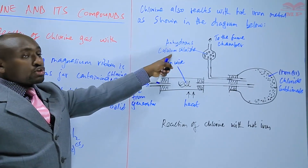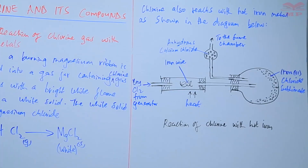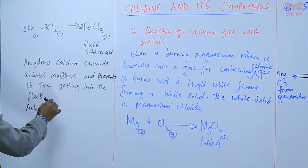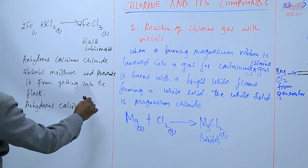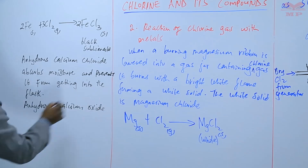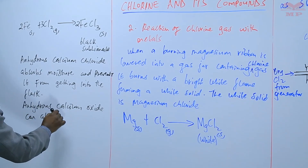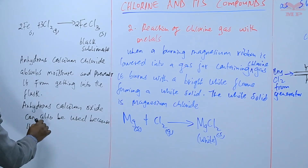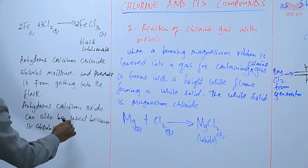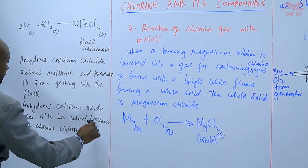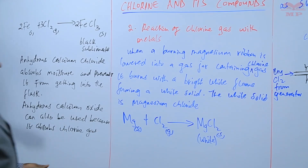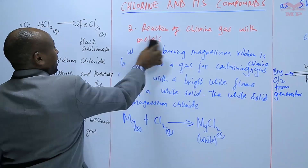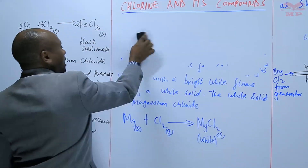We can also use anhydrous calcium oxide, which is able to absorb the chlorine gas before it goes to the atmosphere, because chlorine gas is a pollutant. Anhydrous calcium oxide is a base and is able to absorb chlorine gas, hence preventing atmospheric pollution.